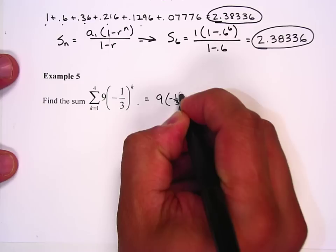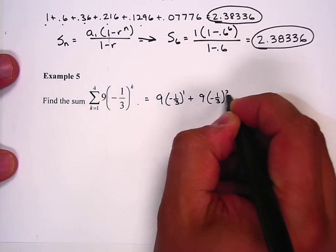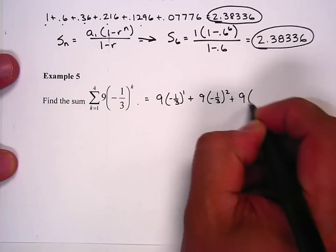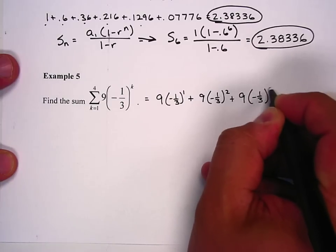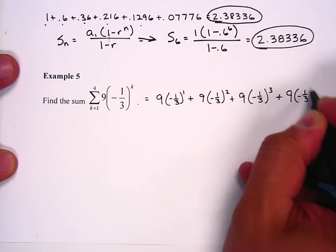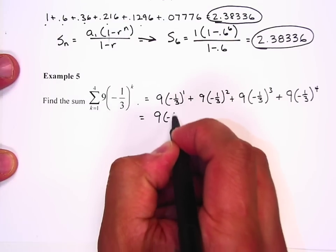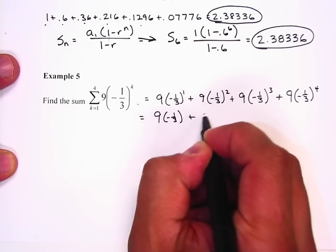I'm going to have 9(-1/3)^1 + 9(-1/3)^2 + 9(-1/3)^3 + 9(-1/3)^4. That's 9(-1/3) + 9(1/9) because it's squared, + 9(-1/27), + 9(1/81).